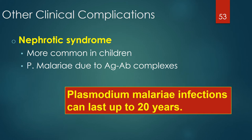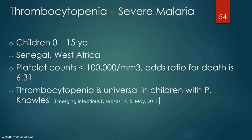Plasmodium malariae infections can last up to 20 years. A study in the American Journal of Tropical Medicine and Hygiene in 2002 pointed out the association of thrombocytopenia with death in children in Senegal, West Africa — when children had platelet counts less than 100,000 per cubic millimeter, the odds ratio for death was 6.31. Another study in Emerging Infectious Diseases in May 2011 demonstrated that thrombocytopenia is almost universally seen in children with Plasmodium knowlesi infections. The average platelet count in childhood Plasmodium falciparum infections is 156,000 per microliter versus 76,500 with Plasmodium knowlesi.